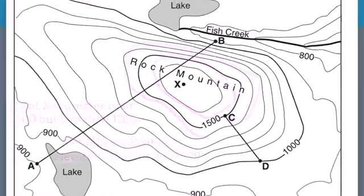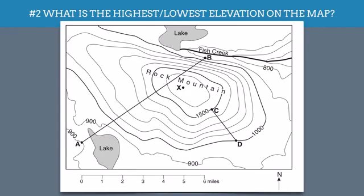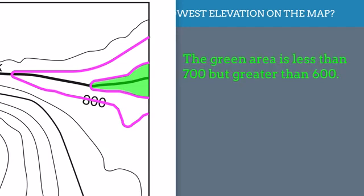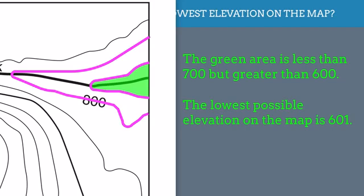But what about lower points on a map? Well, if I look at this map, it seems to me that the lowest spot would be over here by this 800 contour line. And this is decreasing. This river here is flowing downhill. That means that this is a 700 line. And that means that the lowest part of the map is actually in this green area here. Now again, I know it's lower than 700, but because there's no 600 line, the green area has to be between 6 and 700. If I were asked what the lowest possible point shown on the map is, again, it would have to fit in that 700 to 600 range, making the lowest possible elevation 601.